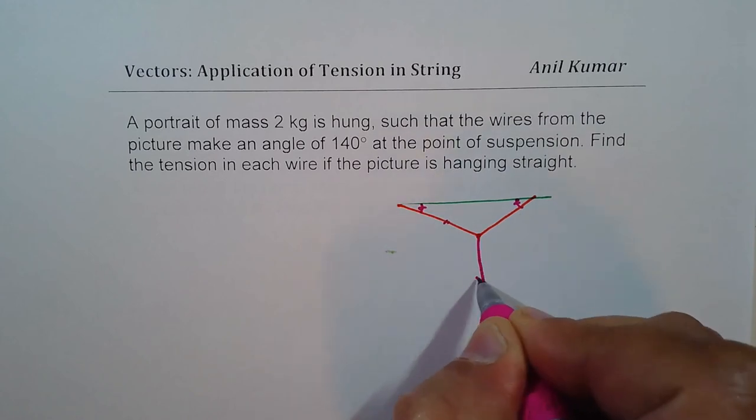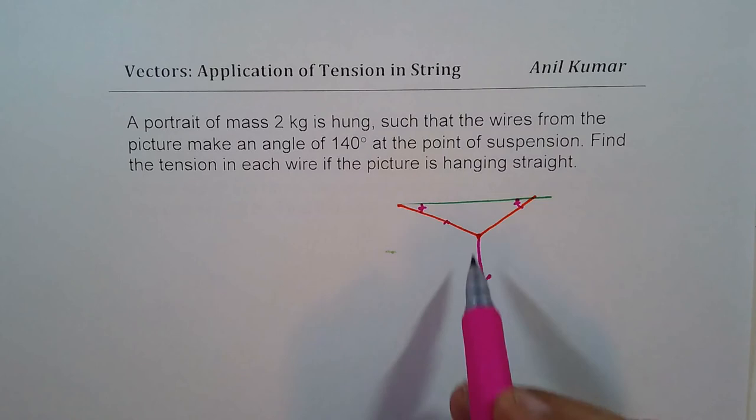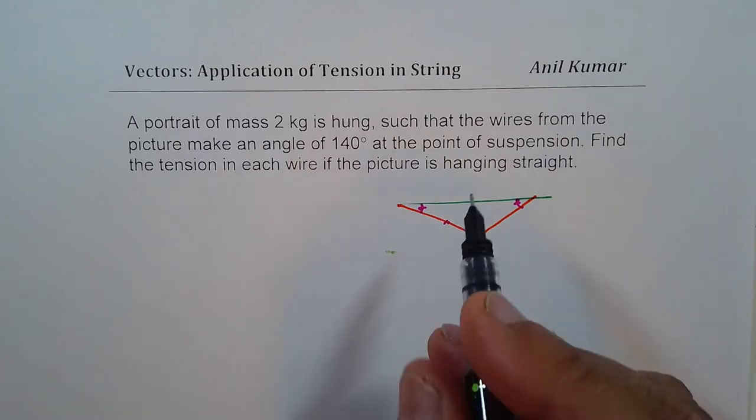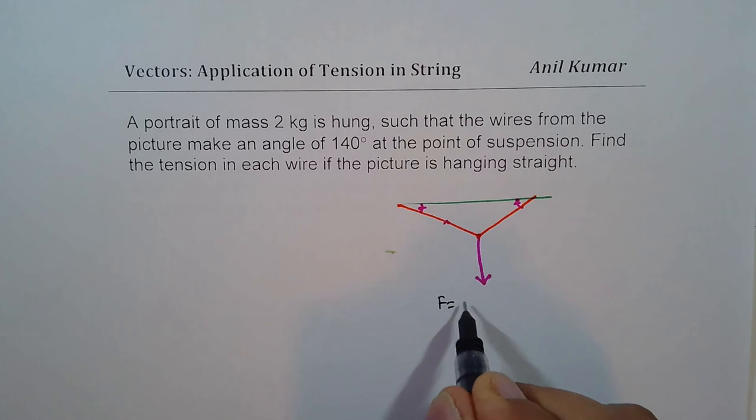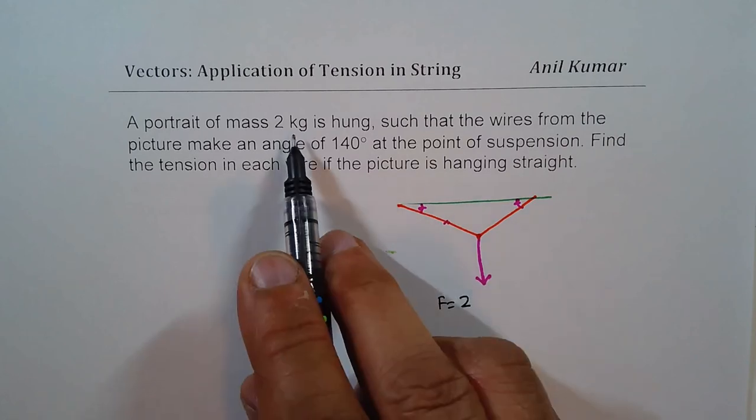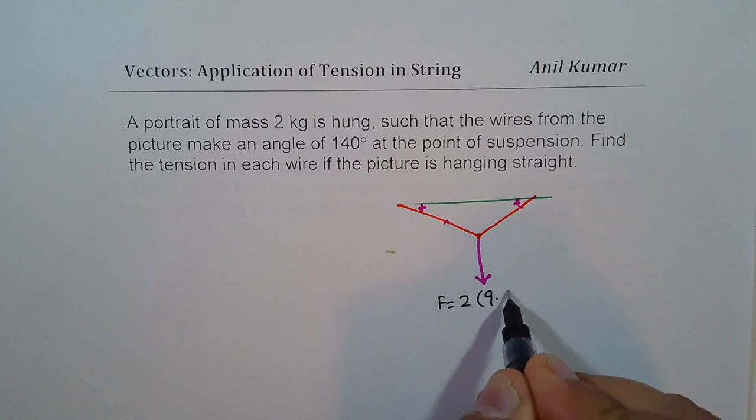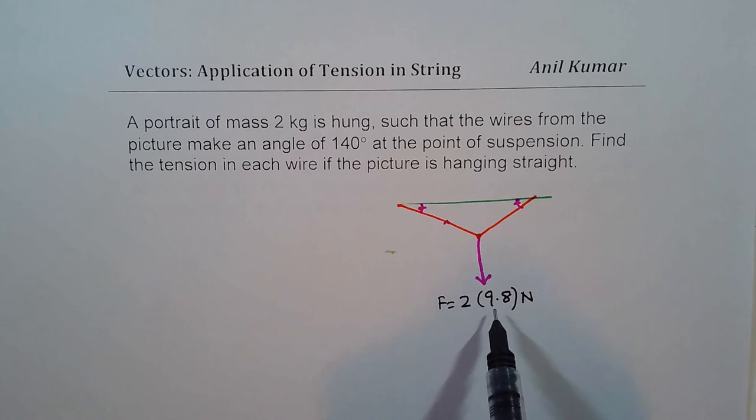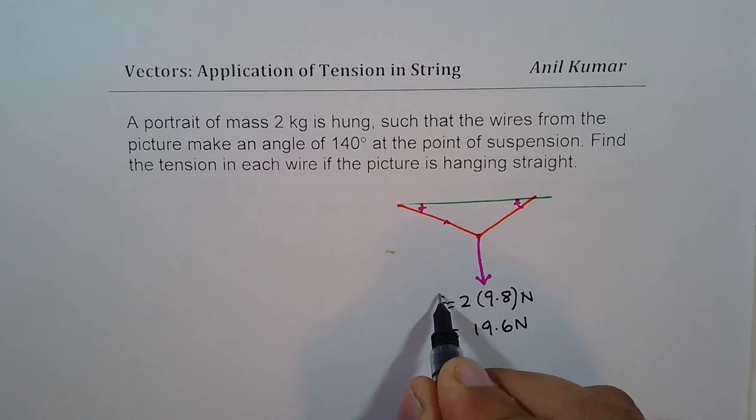And the force which acts downwards is because of 2 kg weight. Let's find this force which is equal to 2. Now, we are given the mass actually, so we'll multiply this by 9.8 to get the force. So 9.8 times 2 gives us 19.6 newtons. So 19.6 newton is the force acting downwards.